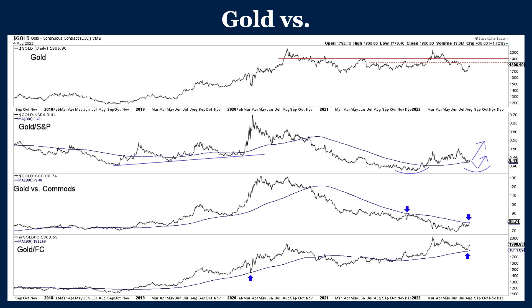First, here we look at how gold is performing against the S&P, commodities, and foreign currency — some important asset classes. Let's start with gold nominally. We can see that 1900 was important monthly and quarterly resistance going back before this year. We had a false breakout, then came all the way back down to 1700. But now, even just looking at this daily chart, we can see 1900 is a very significant level.